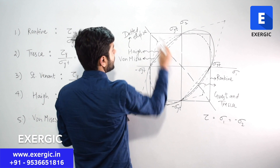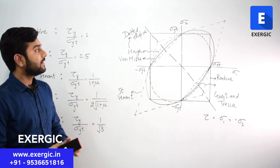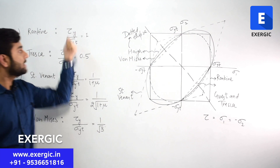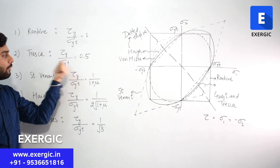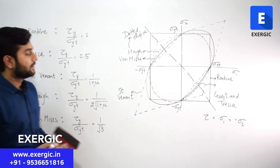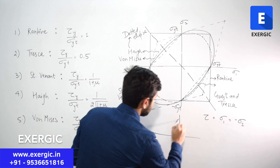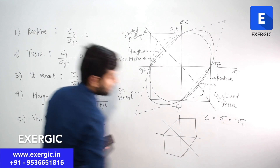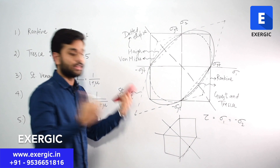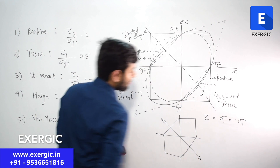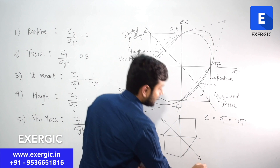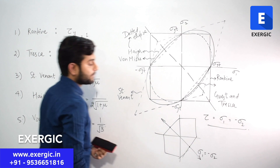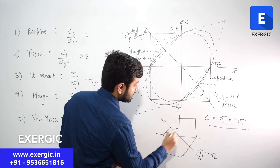Experimentally, Rankine theory (maximum principal stress) is best suited for brittle materials. Maximum Shear Stress Theory and Distortion Energy Theory predict failure of ductile materials most accurately. Saint-Venant and Haigh theories are less accurate for specific materials and are less commonly tested. For hydrostatic loading, Saint-Venant theory gives the best results.